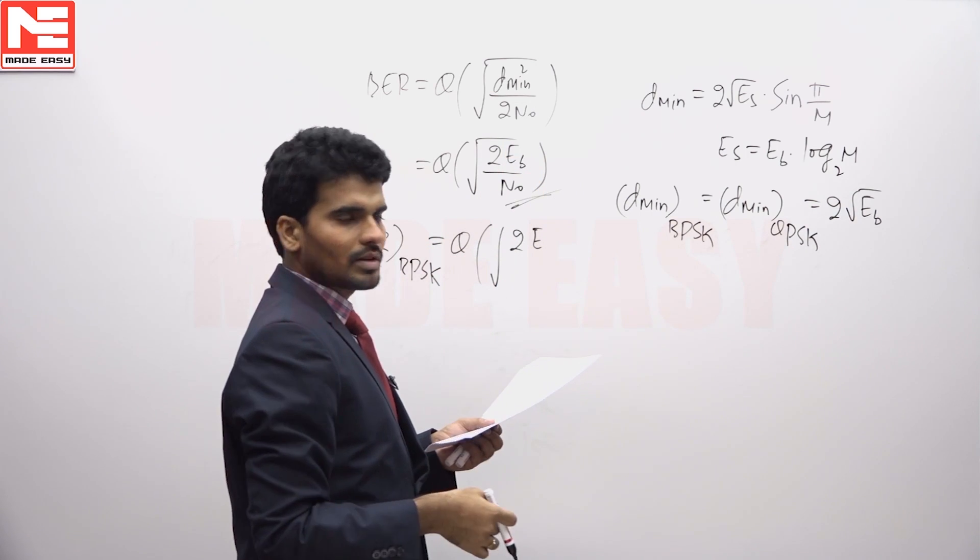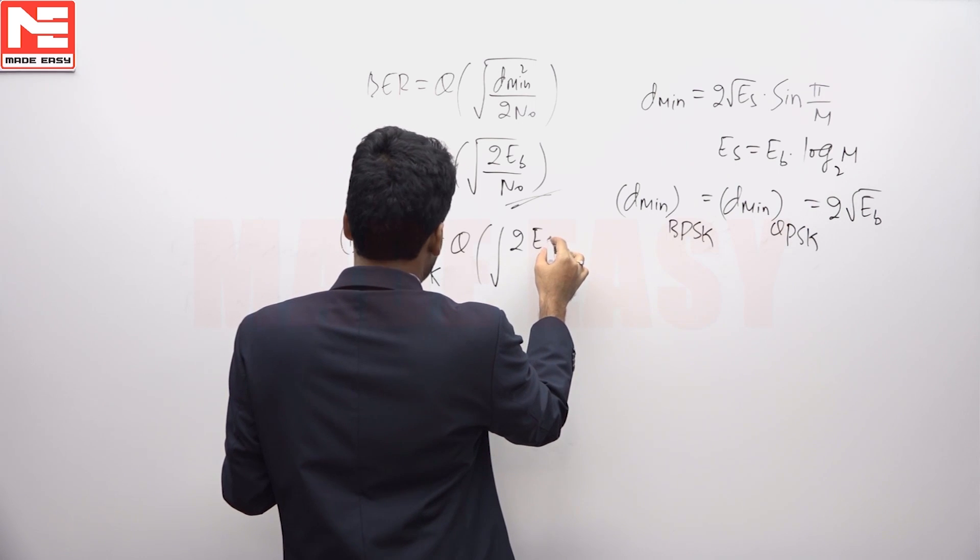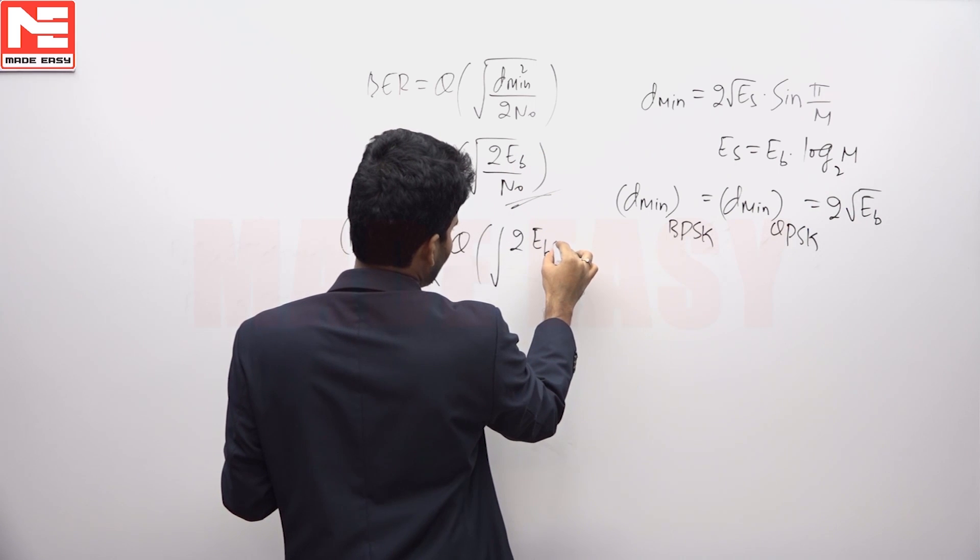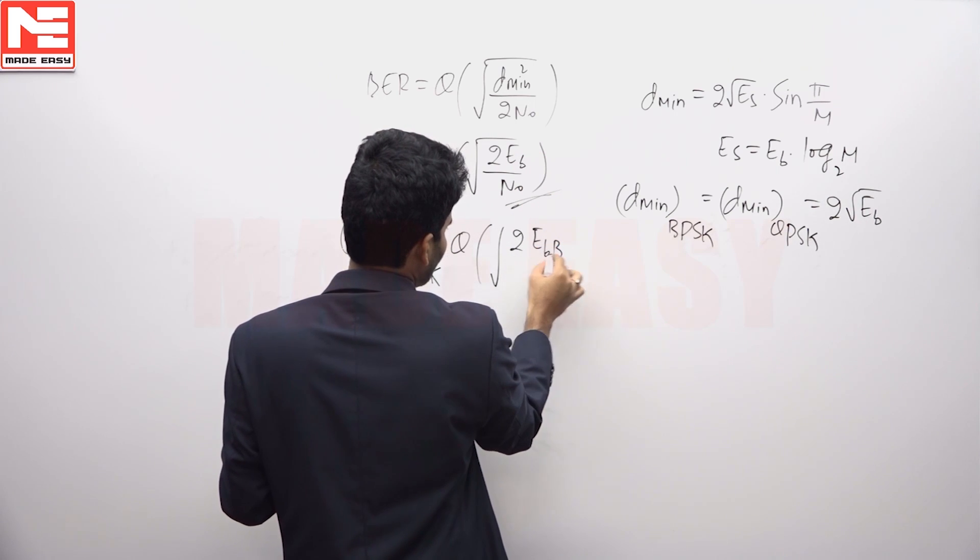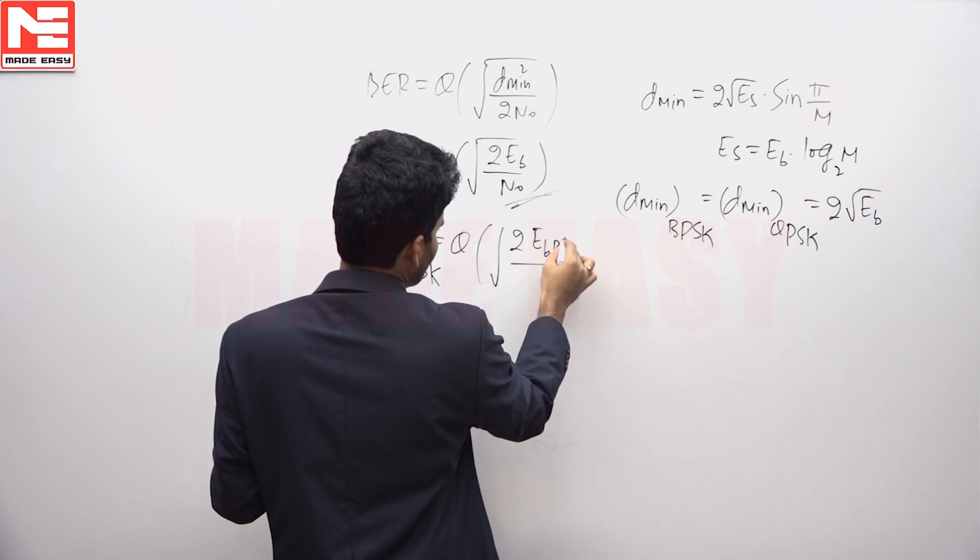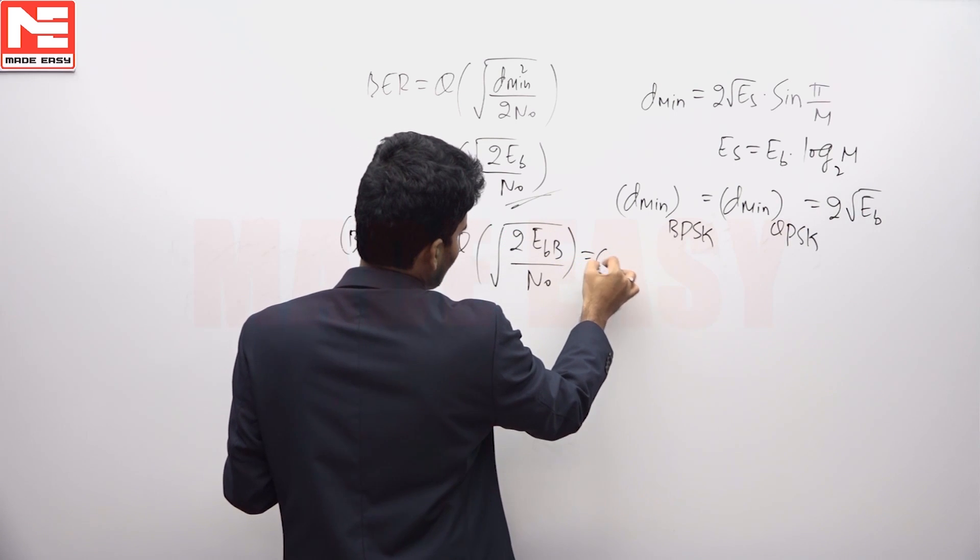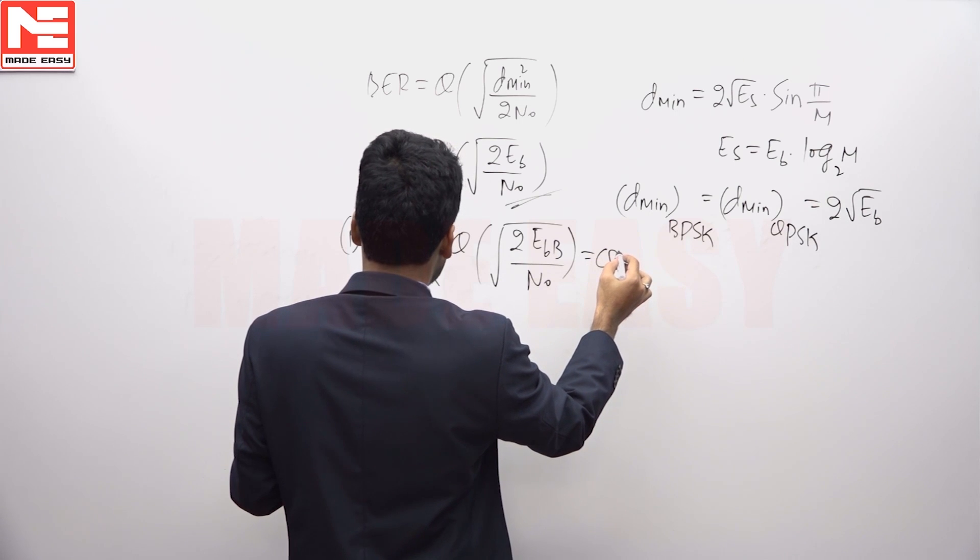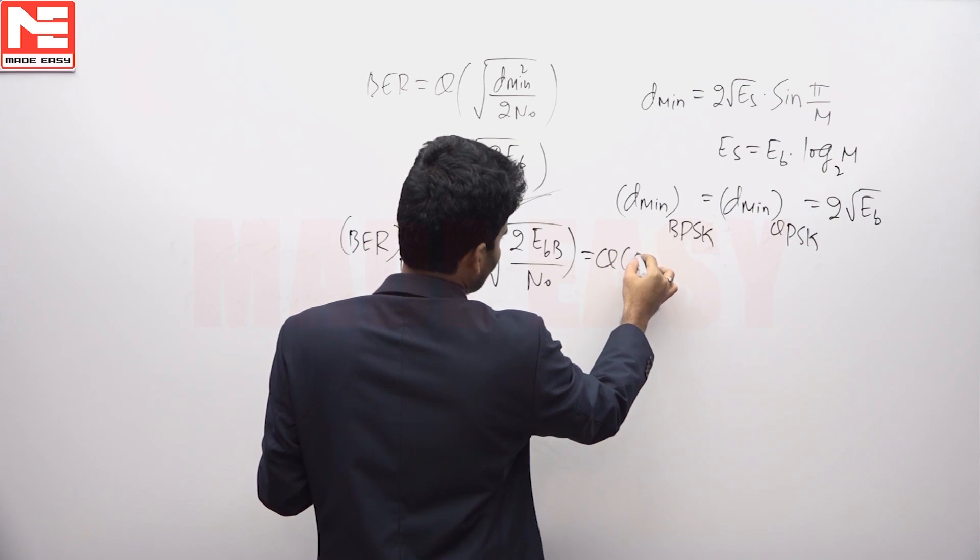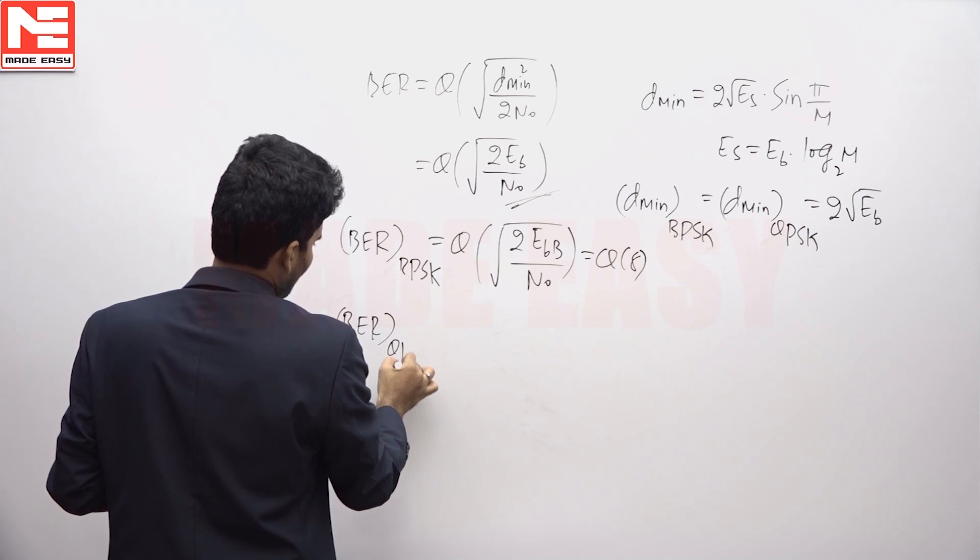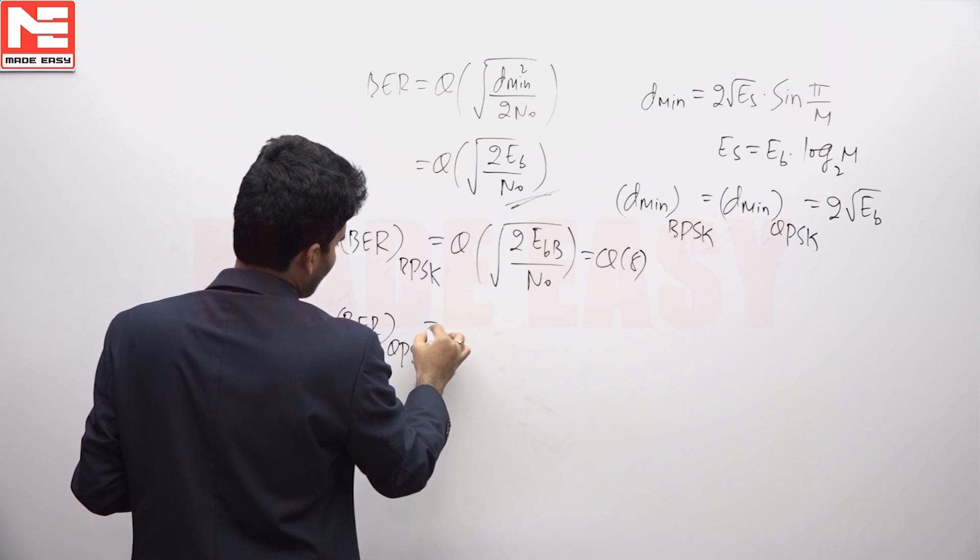For BPSK, I am denoting the average bit energy as EB capital B for binary PSK by N0. It is given that the bit error rate is Q of 8.